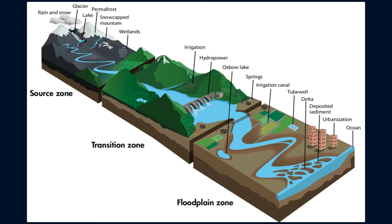In the first zone, water is sourced from a lake, melting snow or glacier, or even groundwater. Then it goes through the transition or transfer zone, where the streams are neither depositing nor eroding rock at high rates. Finally, in the depositional or floodplain zone, most of the deposition occurs on the edges of a river, on the floodplain, or finally into the ocean.